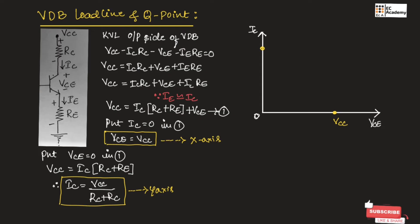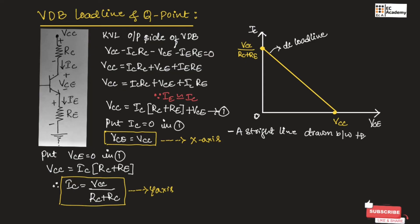On the y-axis, we mark a point equal to VCC divided by (RC plus RE). Once we mark a point on the x-axis and y-axis, we draw a straight line joining these two points. This straight line is known as the DC load line — a straight line drawn between the maximum output voltage and maximum output current.